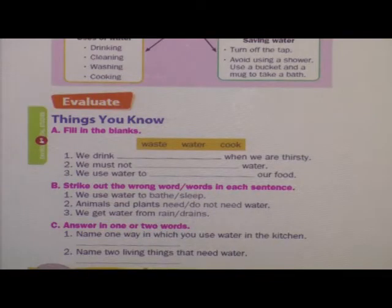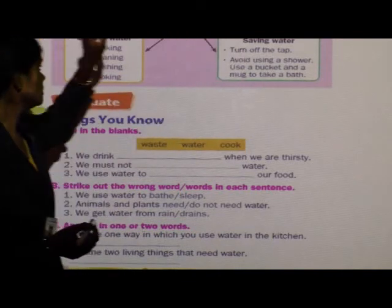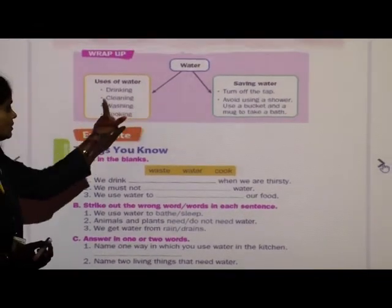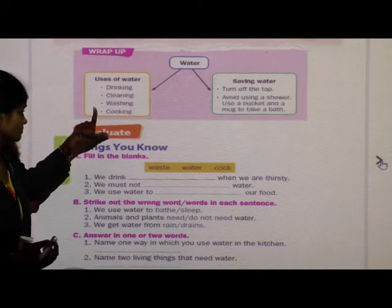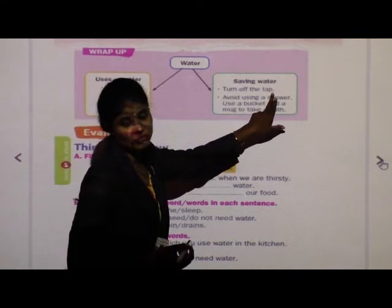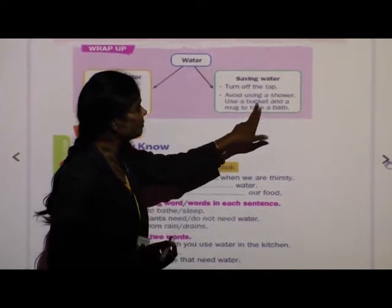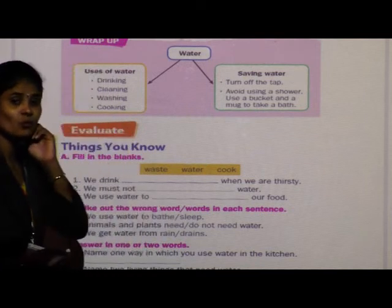Now come to the next page — page number 159. Let's see what we have learned about water: uses of water and the ways to save water. Uses of water: we use water for drinking, cleaning, washing, and cooking. Ways to save water: turn off the tap while brushing or shaving; avoid using a shower — use a bucket and a mug to take a bath. In this way we can save water.